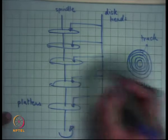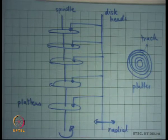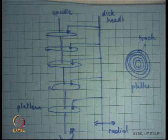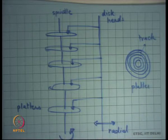There are two mechanical movements required to access a disk block. The first is the radial movement of the disk head itself. The second is the rotational movement of the spindle, which happens at a continuous speed. Both these movements define how long it takes to access a disk block.